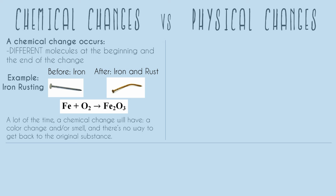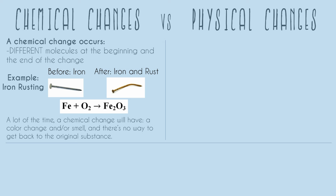So that's chemical changes. Now let's look at physical changes. The definition is that there's still a change — it's not just nothing — but the definition of physical is the opposite of chemical. We have the exact same molecules at the beginning and the end of the change. We have not added or gotten rid of any molecules.